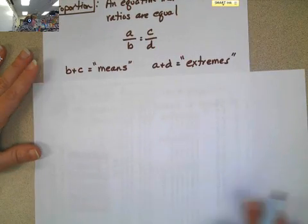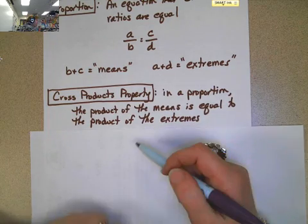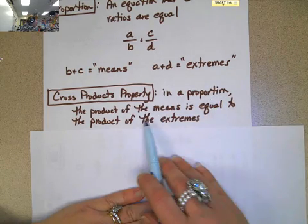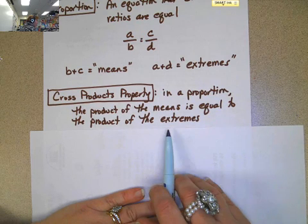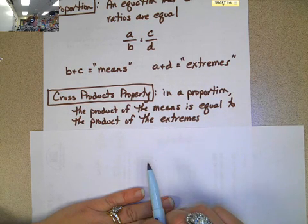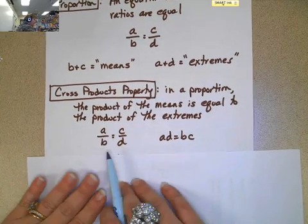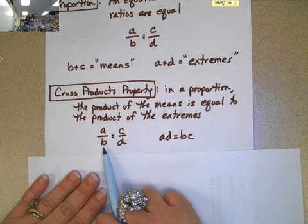Now, there is a property that says, the cross products property says that if you have a proportion, the product of the means is equal to the product of the extremes. I know some people refer to this as the butterfly method or the means extremes property, but what it's saying is that if you have a proportion,